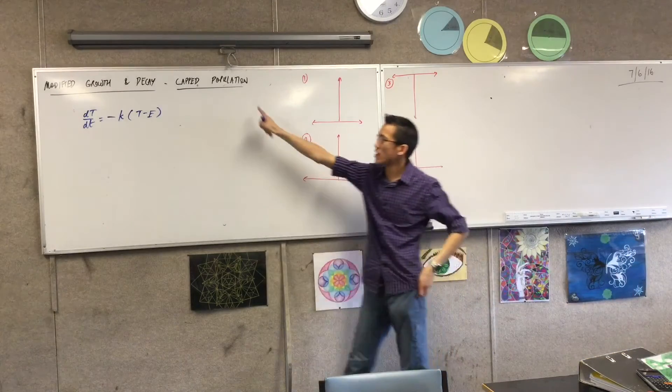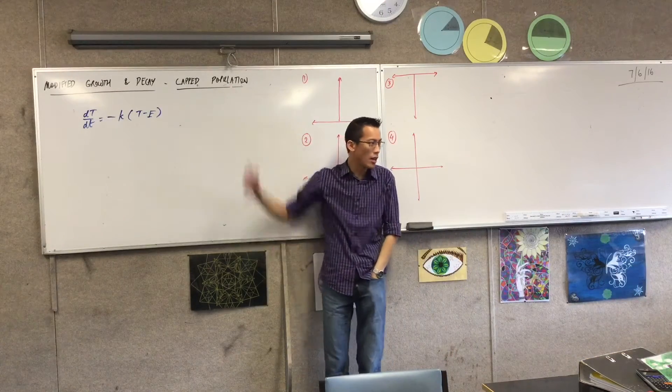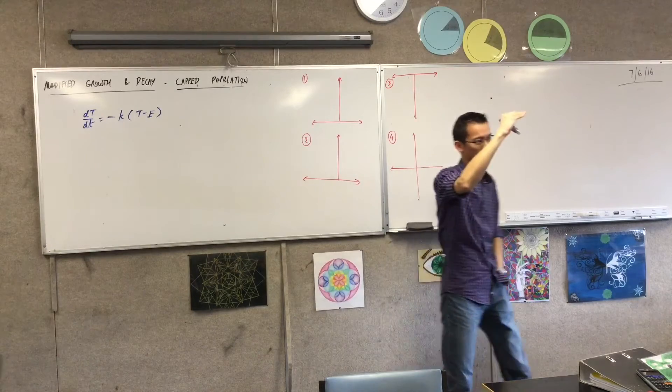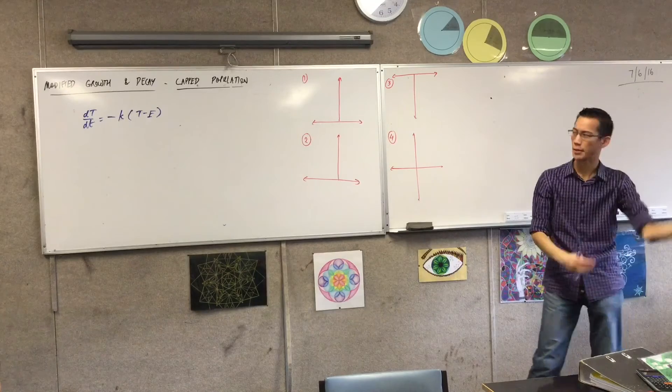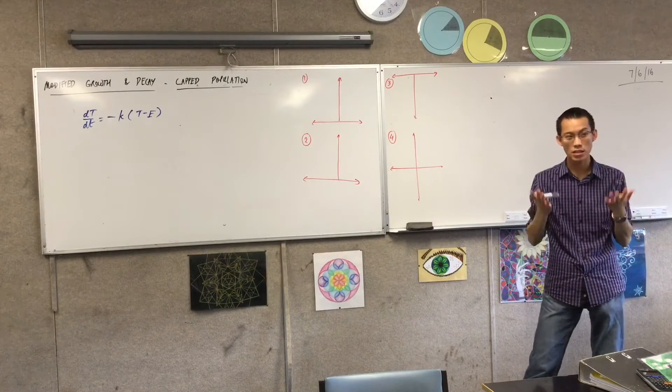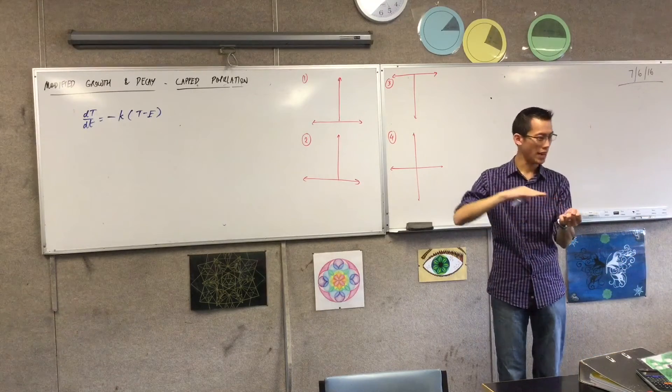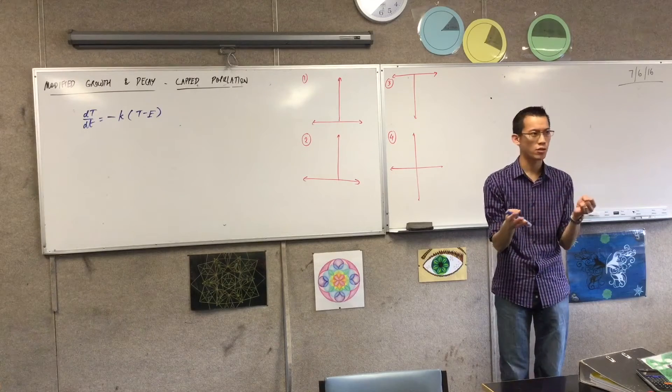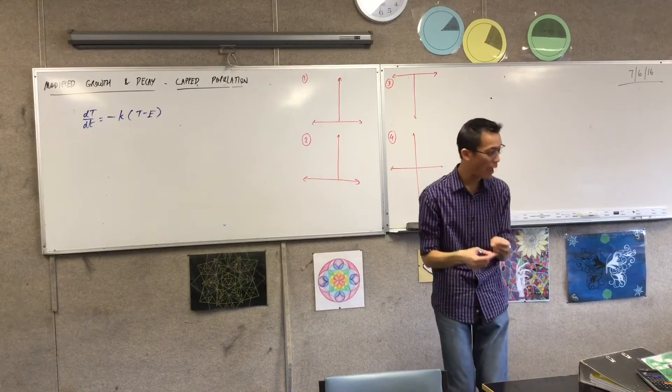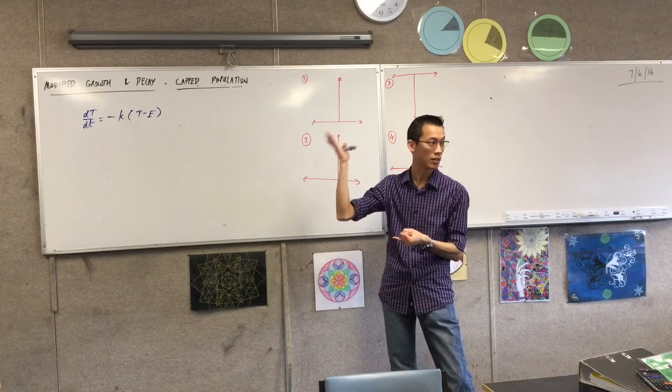But what about situations like this where you're not decaying, but you're going up towards something, but in a similar way, there's some kind of limit past which you cannot grow any further. Now populations tend to do this. They grow sort of exponentially to a certain point, but then, what kinds of things get in the way of a population just growing limitlessly?